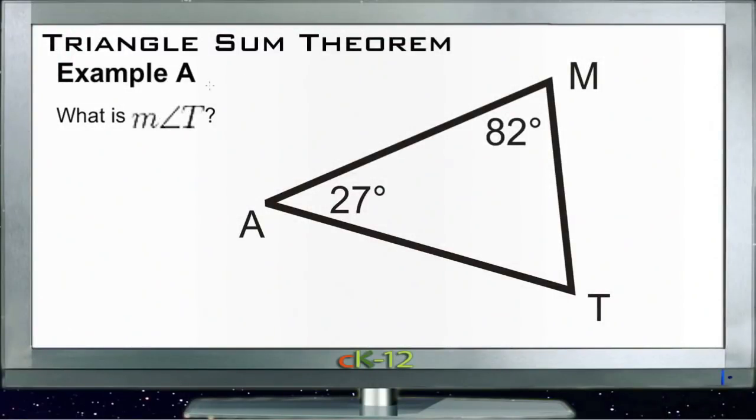All right, let's take a look at the examples for the triangle sum theorem. Example A asks us what the measure of angle T is. Remember that the angle sum theorem tells us that the measures of all the angles in a triangle always equal 180 degrees.